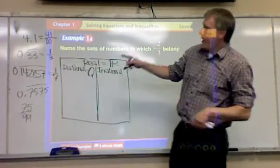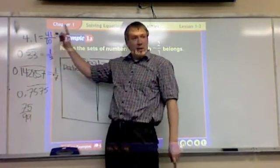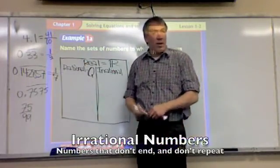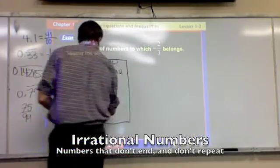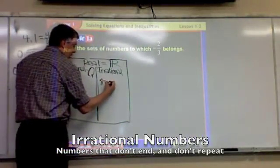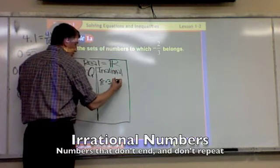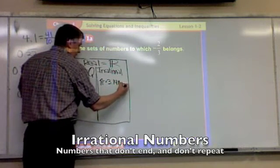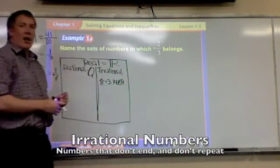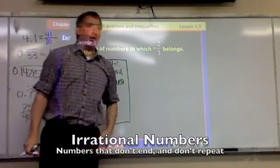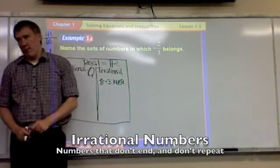Irrational are all the numbers that don't end and don't repeat. Can you think of one number that doesn't end and doesn't repeat? Pi. The most common example. Pi, I only know it to five decimal places. 3.14159, and then it continues on forever, and it never has a pattern to repeat itself, ever.